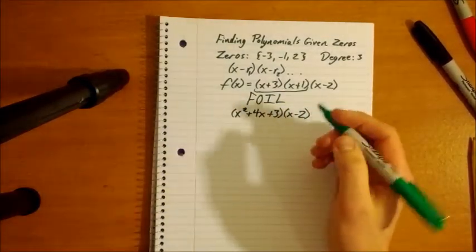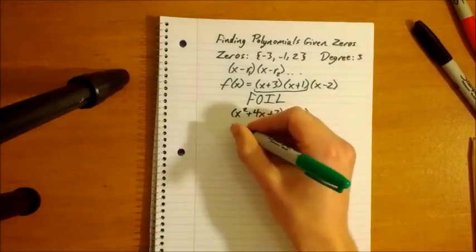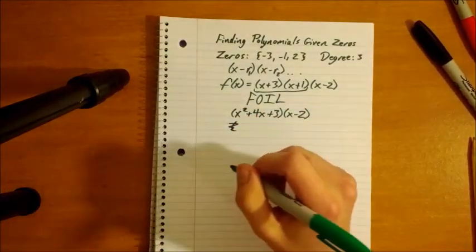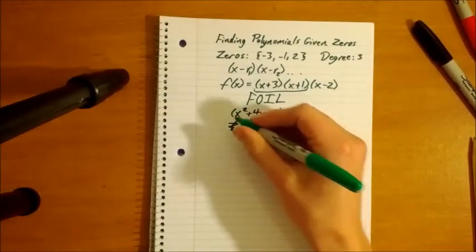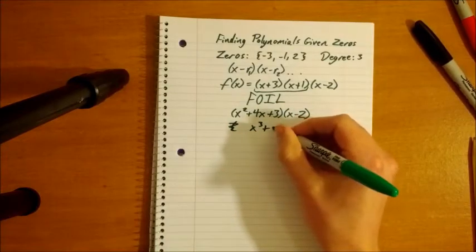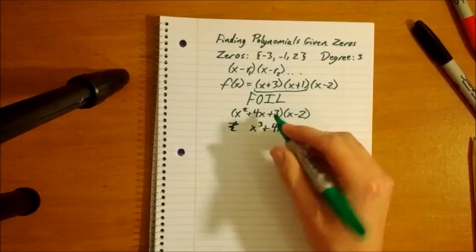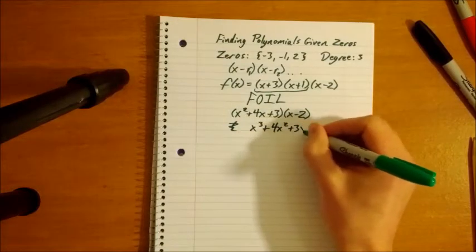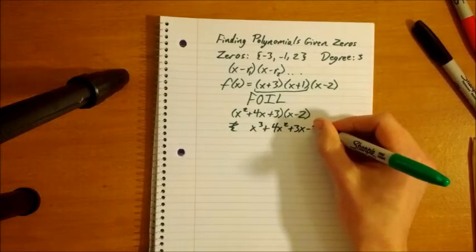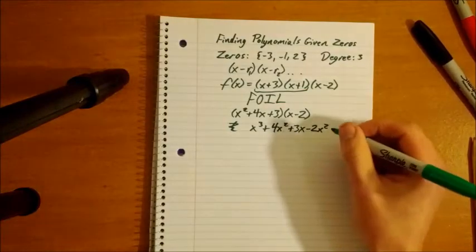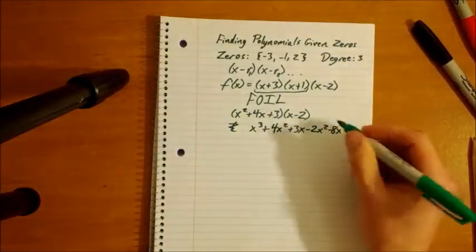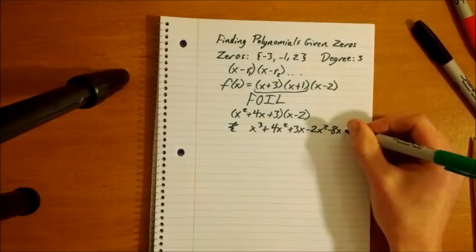So we just do an extended version of FOIL, basically. So we're going to have, let's see, oh, I don't need to write that in parentheses. We are going to have the x squared times x is x cubed, 4x times x is 4x squared, and 3 times x is 3x, and then we multiply all these by negative 2. So you have negative 2x squared, I'm going to run out of space, and negative 8x is negative 2 times 4x, and negative 2 times 3 is negative 6.